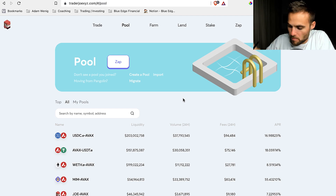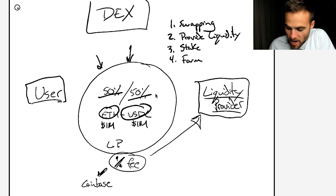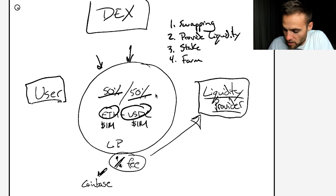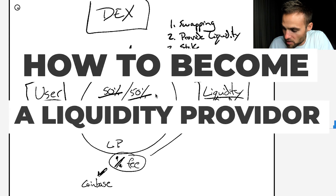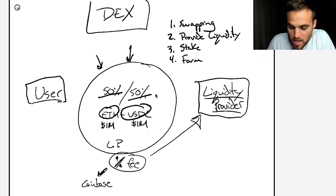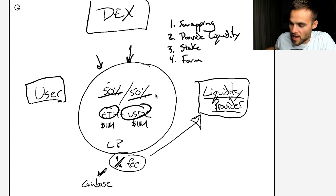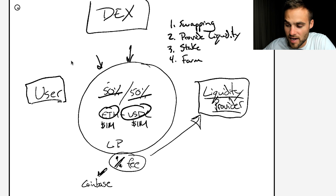Next, how do you provide liquidity? Remember we talked about how you can be a user or a trader, but you could also be a liquidity provider. If you provide your funds to a liquidity pool, you earn a percentage of all trading fees. This is a great way to put your assets to work and earn another source of passive income. Generally you need to provide 50% of one asset and 50% of another to create an LP position — basically these two assets smashed together. I'll show you how this works on Trader Joe.